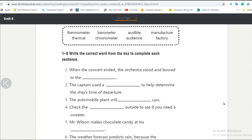Number two, the captain used the... to help determine the ship's time of departure. What is this? It seems like the captain has used something that enables him to know the time of departure. A chronometer? Yeah, a chronometer. It's a tool that enables the captain to have an accurate time of departure and stuff.